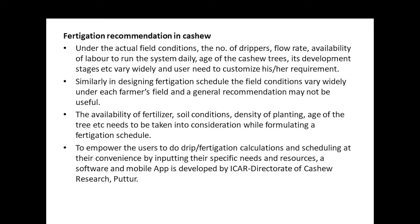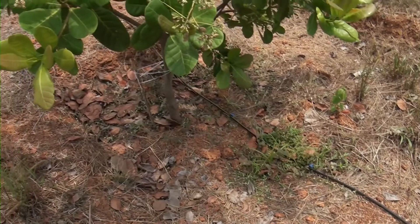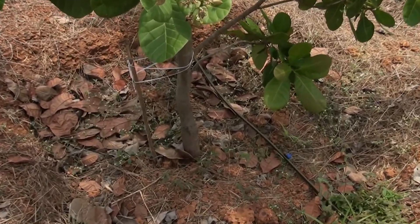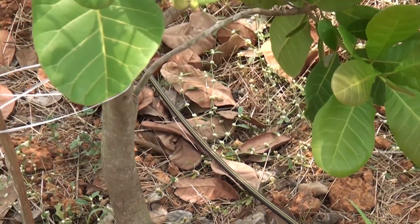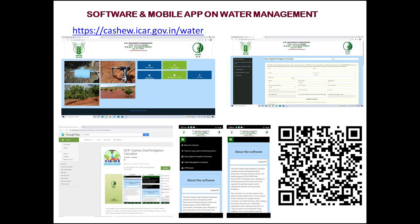Under actual field conditions, the number of drippers, flow rate, availability of labor to run the system daily, age of the cashew trees and their development stages vary widely, and the user needs to customize his or her requirements. Similarly, in designing a fertigation schedule, field conditions vary widely under each farmer's field. The availability of fertilizer, soil conditions, density of planting and age of the tree need to be taken into consideration while formulating a fertigation schedule. To empower users to do drip or fertigation calculations and scheduling at their convenience by inputting their specific needs and resources, a software and mobile app has been developed by ICAR Directorate of Cashew Research, Puttur.